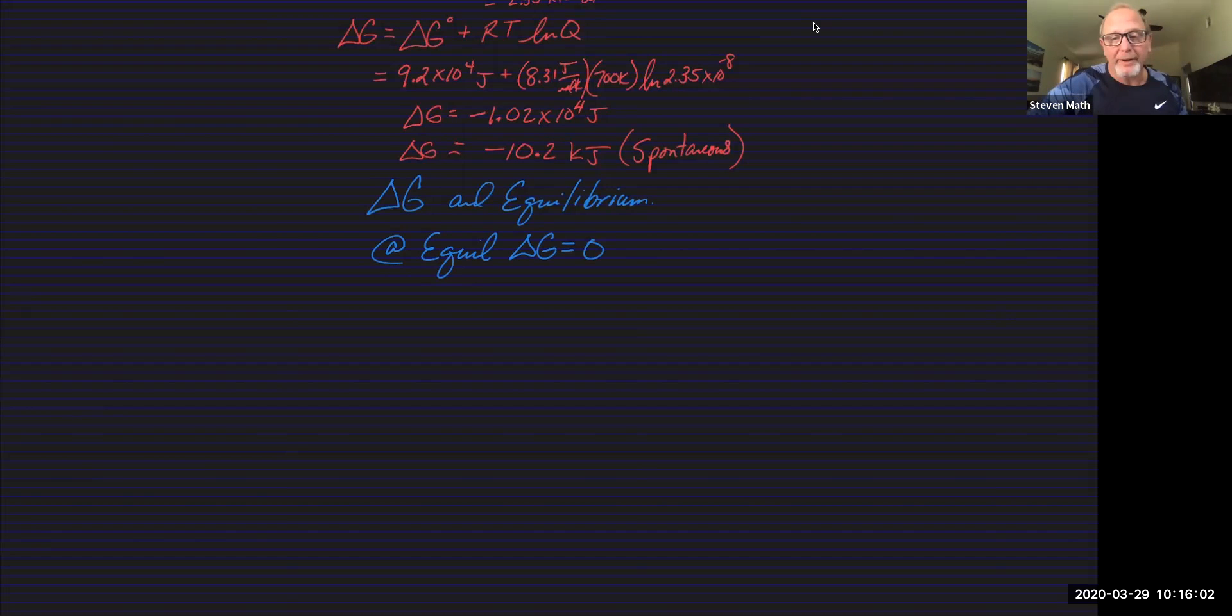Not G prime, not G standard. G under the conditions you have. G will be zero. And if that's the case, then if delta G is less than zero, delta G is negative,